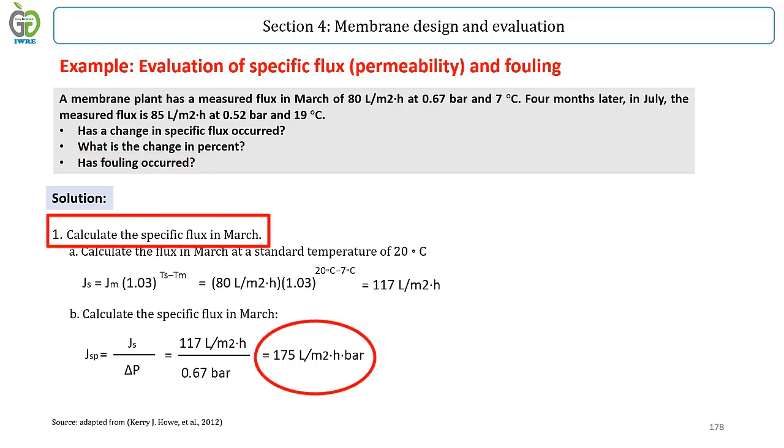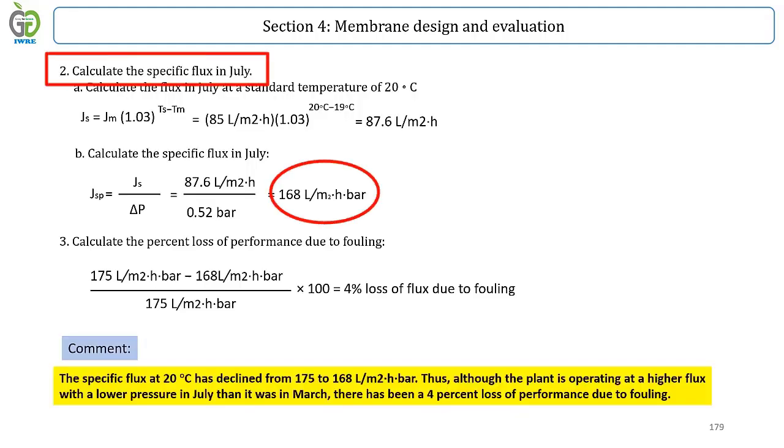the specific flux in March and July must be calculated and then the percent loss of performance due to fouling can be calculated.